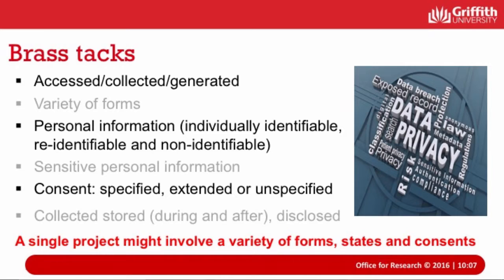When we're talking about personal information, that might be individually identifiable — and these are the terms that the National Statement uses. So it can be individually identifiable or re-identifiable, so we're talking about something that may be coded where the researchers have got access to the code key, and then non-identifiable. That might be coded by an agency supplying it to the researchers but where the researchers don't have the code key, or all identifying information has been stripped out, so it's anonymous.